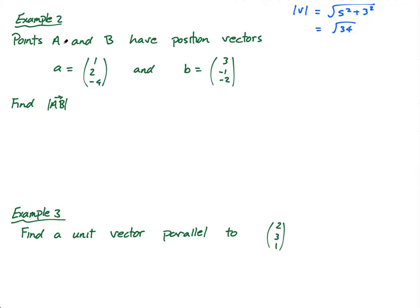Next example: points A and B have position vectors — find the length of AB. I've put in this example to make sure we all understand the difference between a point and a position vector. When they say find the length AB, that's the vector that goes from point A to point B — it's neither of the given position vectors. I need to find AB.